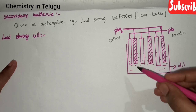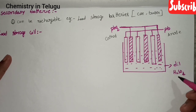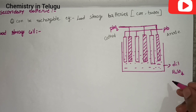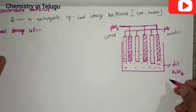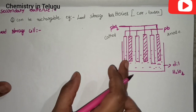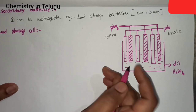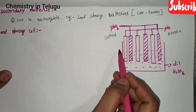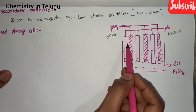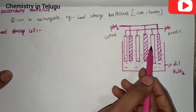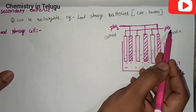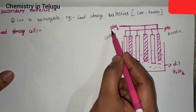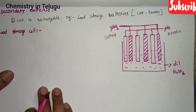This is the dilute H₂SO₄, which is the electrolytic solution. We will now look at the electrodes and the cells.